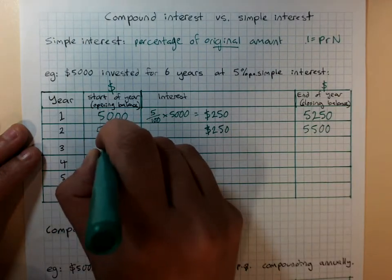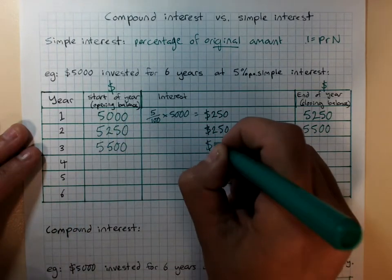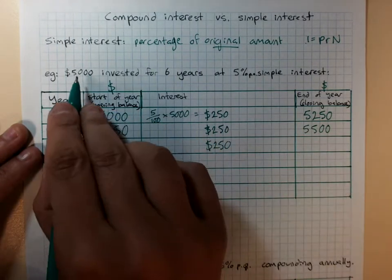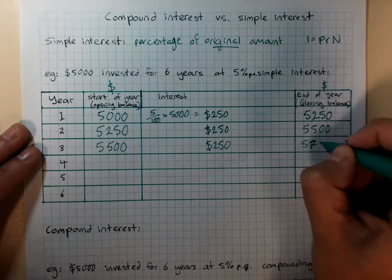At the start of the year, there's $5,500 in my account, but I still only earn 5% of my original starting balance. I'm up to $5,750.